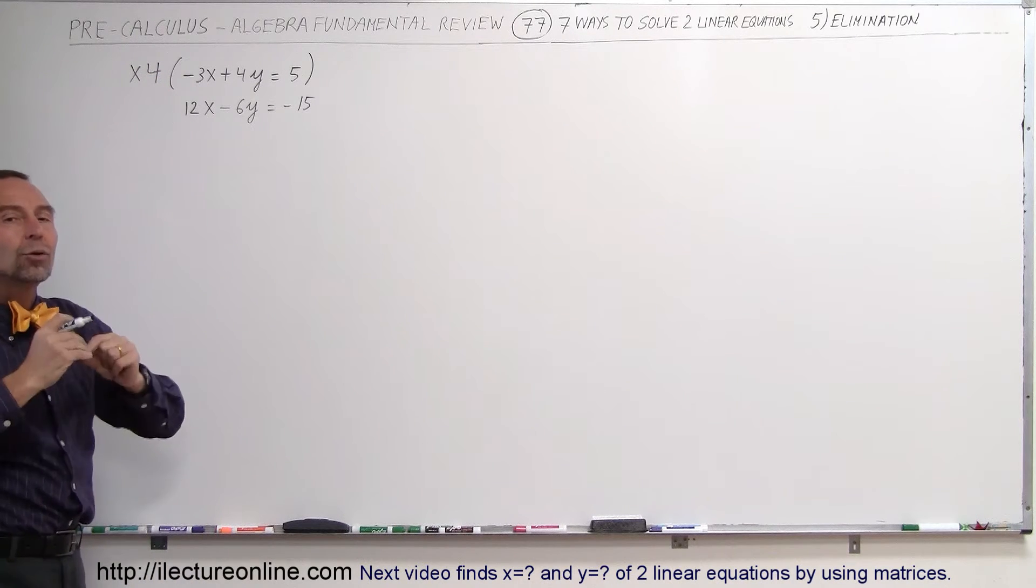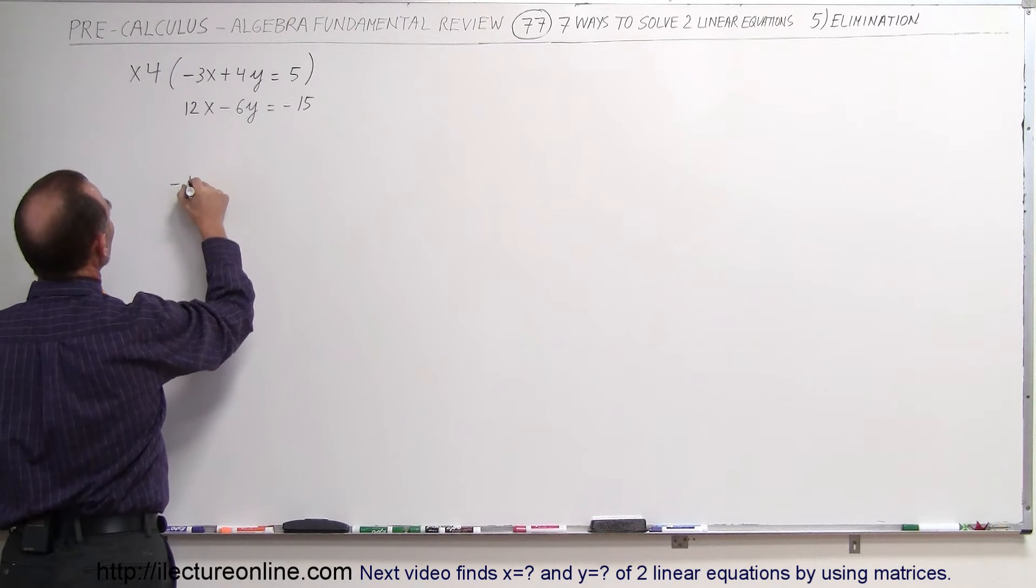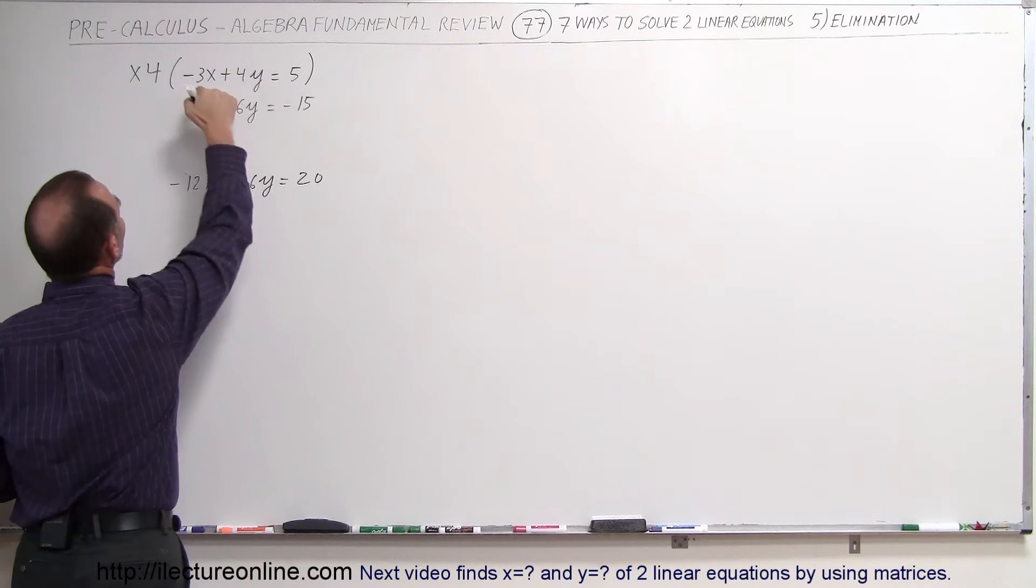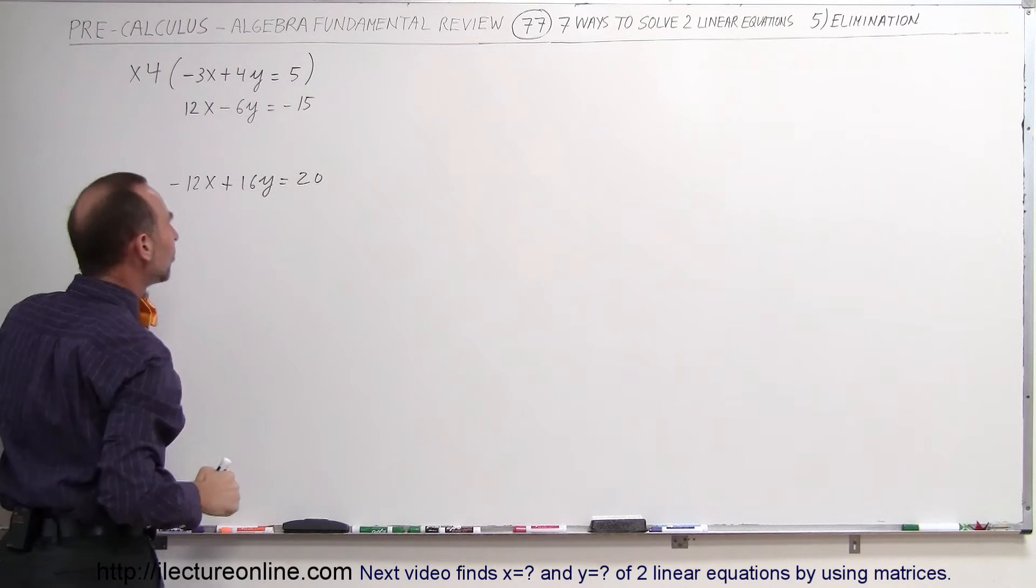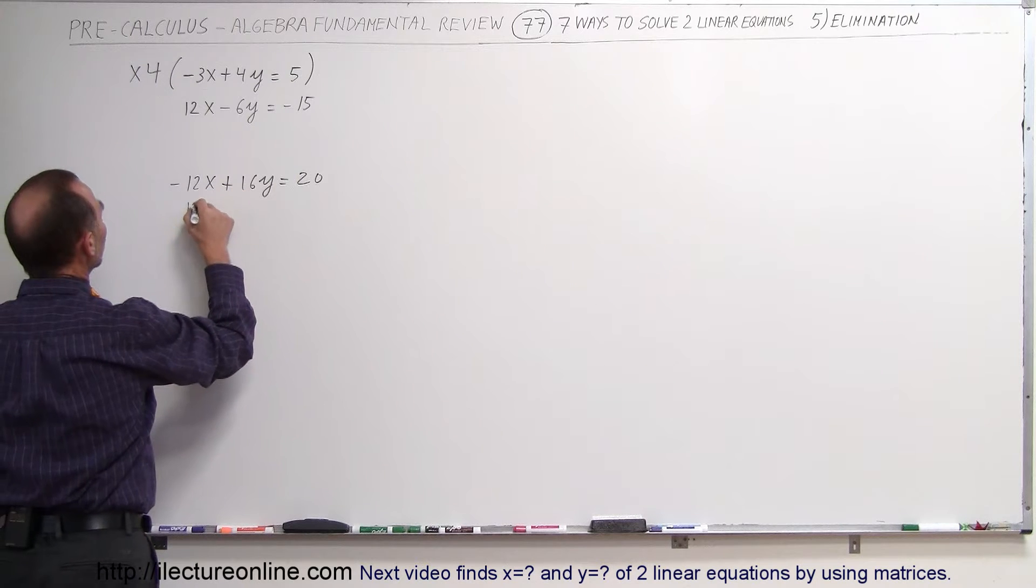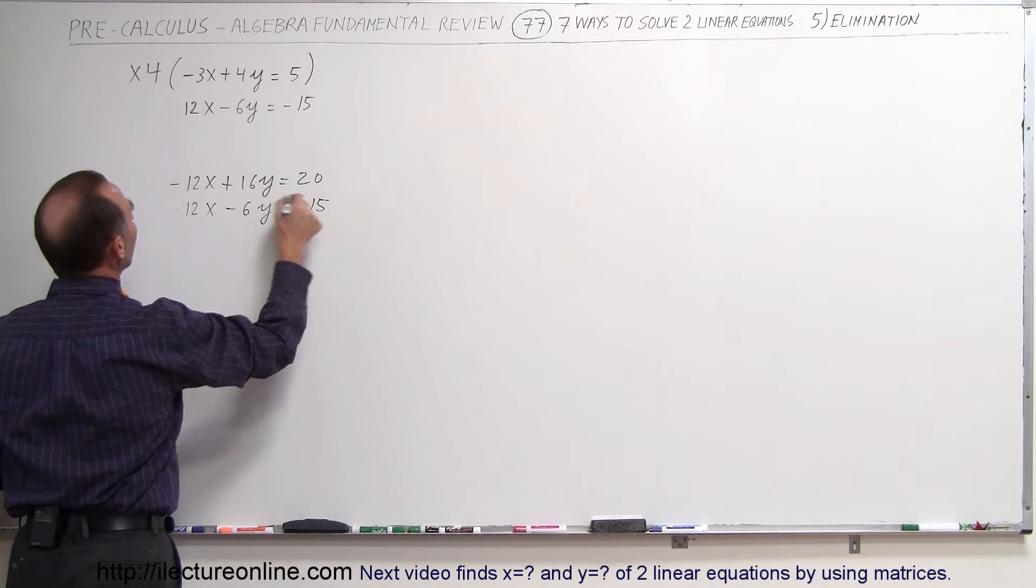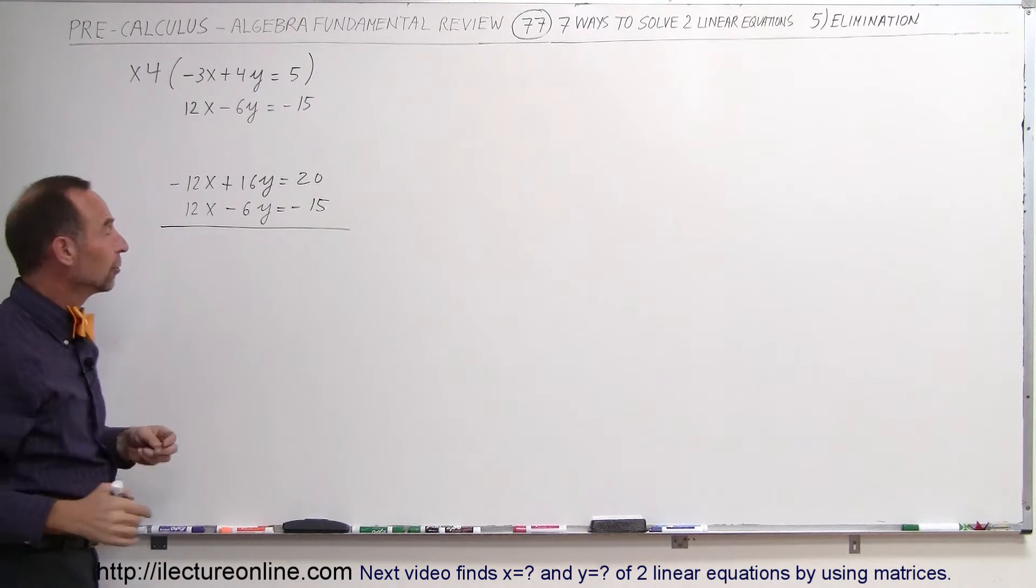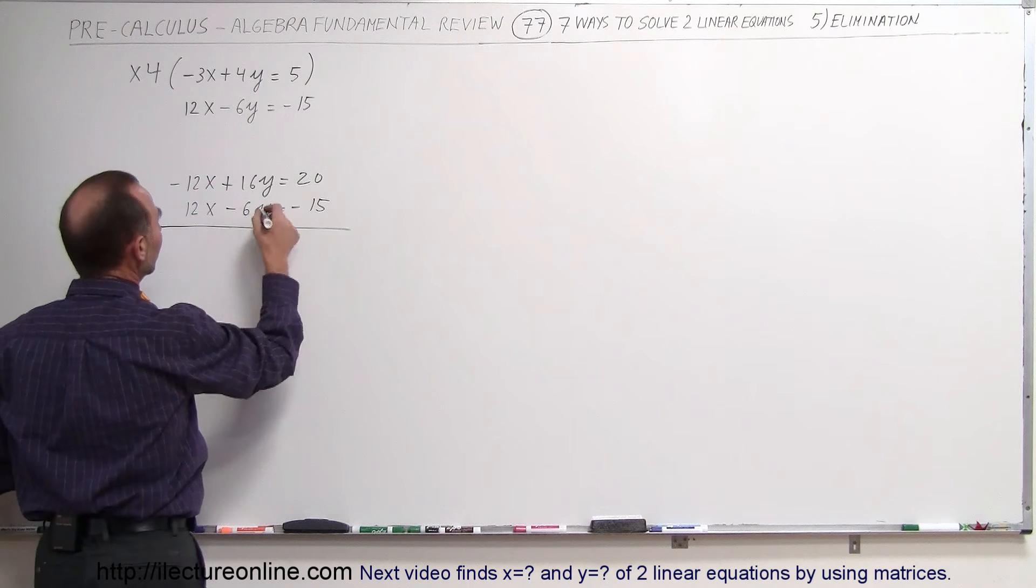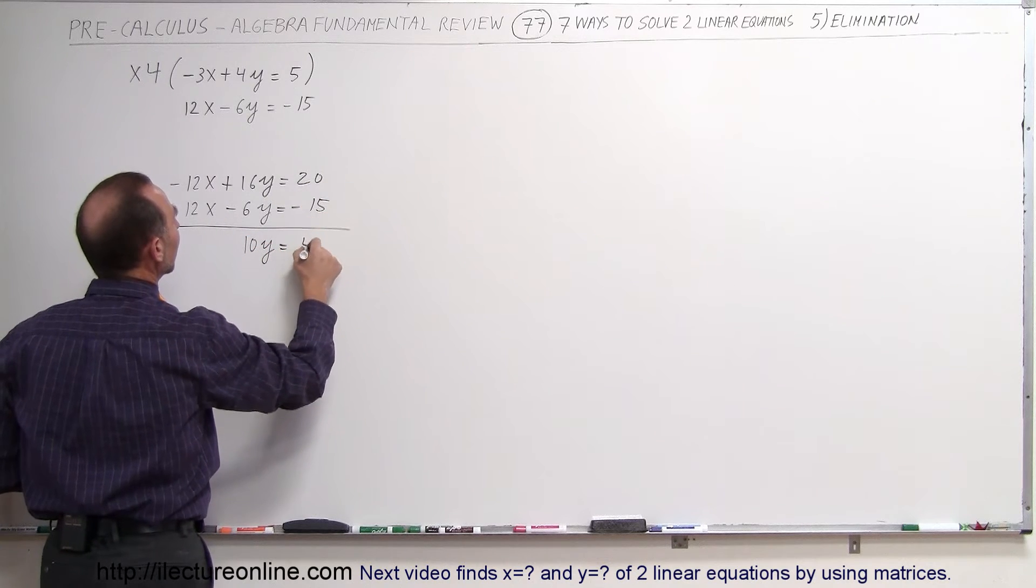And then I will combine the two equations and the x's will drop out. So the first equation now becomes minus 12x plus 16y equals 20. Notice I took each term in the equation and multiplied it times 4. Now I write below that my second equation unchanged, so 12x minus 6y equals minus 15. And all I do now is add the two equations together. So when I do, the x's drop out, plus 16y minus 6y is 10y equals, and 20 minus 15 is 5.